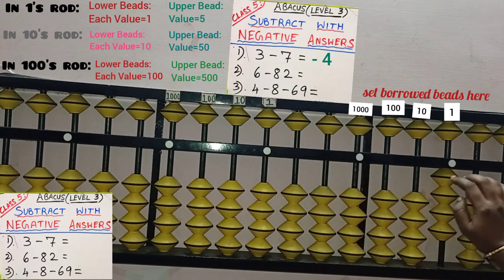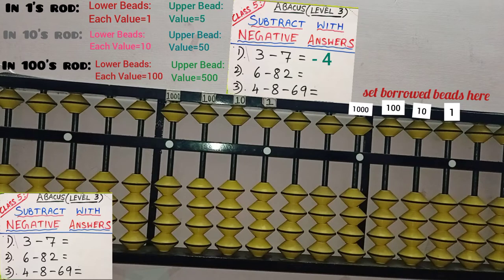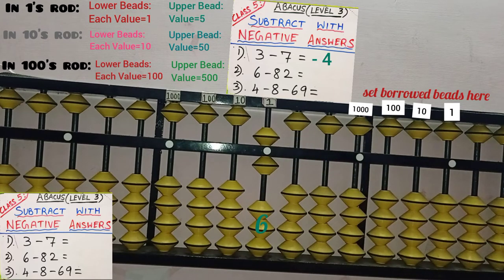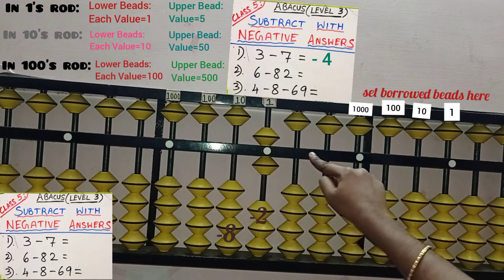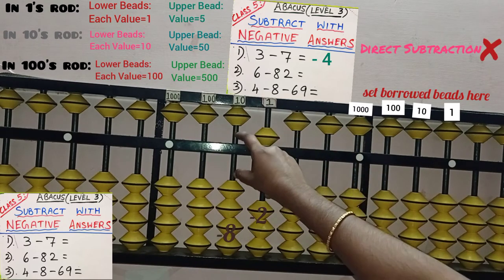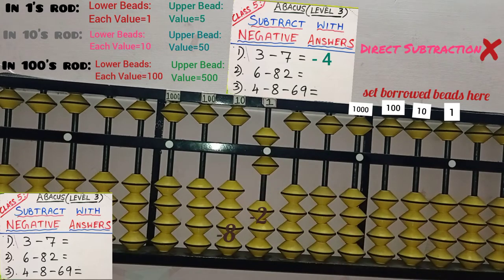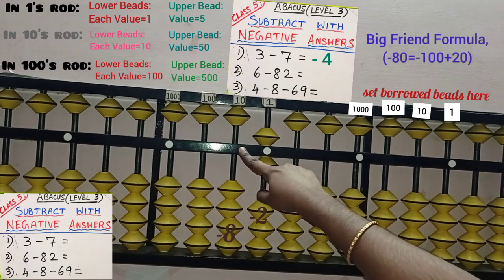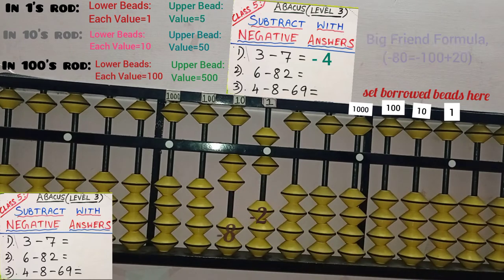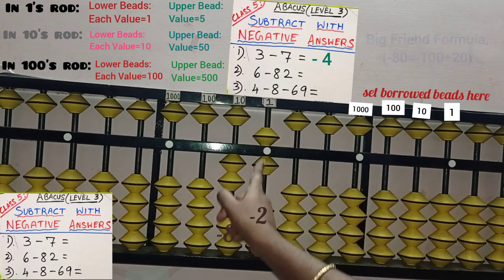Now clear all the values. Next, we will do the second sum: 6 minus 82. First, we will add 6 in 1's rod — 5, 6 — 6 is added. First row completed. Next, second row: minus 82 means we need to remove the beads from the answer point. Remove 8 beads from 10's rod and remove 2 beads from 1's rod. Let's do the 10's rod first. Here we cannot do minus 8 because no beads were added. Check big friend — 8's big friend is 2 because 8 plus 2 equals 10. In question, minus 8 means we need to add 2 here, so plus 2. We are adding friend, then remove the bar in next rod.